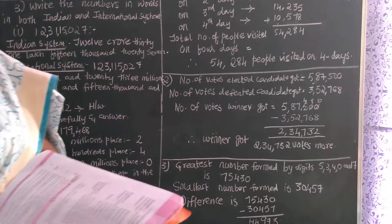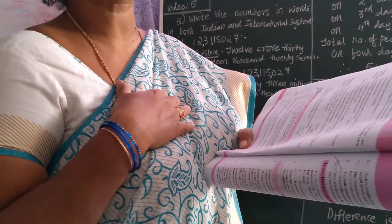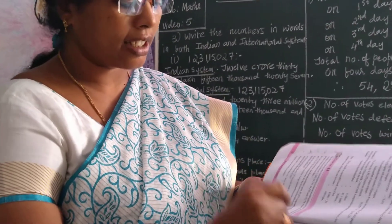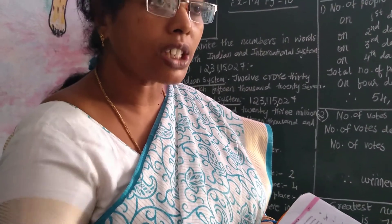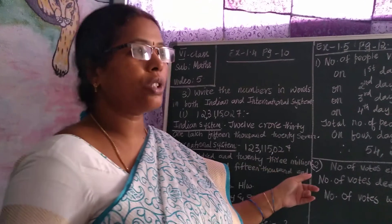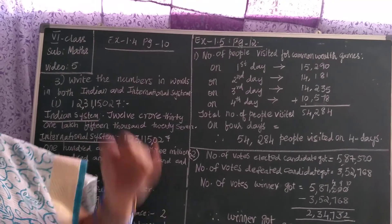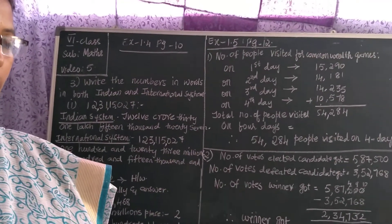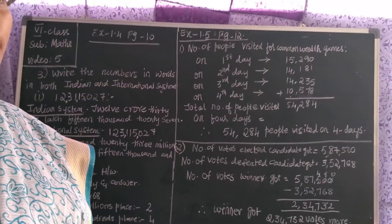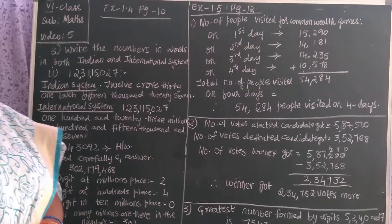So children, you should take your textbook, read the problem yourself first in your mind, then go through the video. Now I will explain how to solve this problem. After reading the problem, you should know whether it is addition, multiplication, or subtraction. This problem asks 'on the whole' — on the whole means you should add.